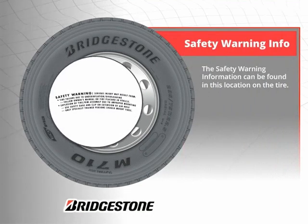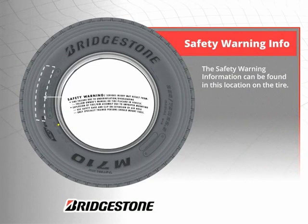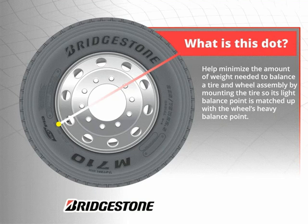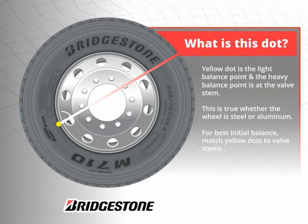The safety warning information can be found in this location on the tire. The yellow dot on the tire helps minimize the amount of weight needed to balance a tire and wheel assembly by mounting the tire so that its light balance point is matched up with the wheel's heavy balance point. All new Bridgestone truck and bus radials are factory marked with a yellow dot at the light balance point. Generally, the heavy balance point of a wheel is at the location of the valve stem, regardless of whether the wheel is steel or aluminum. For best initial balance, match yellow dots to valve stems.